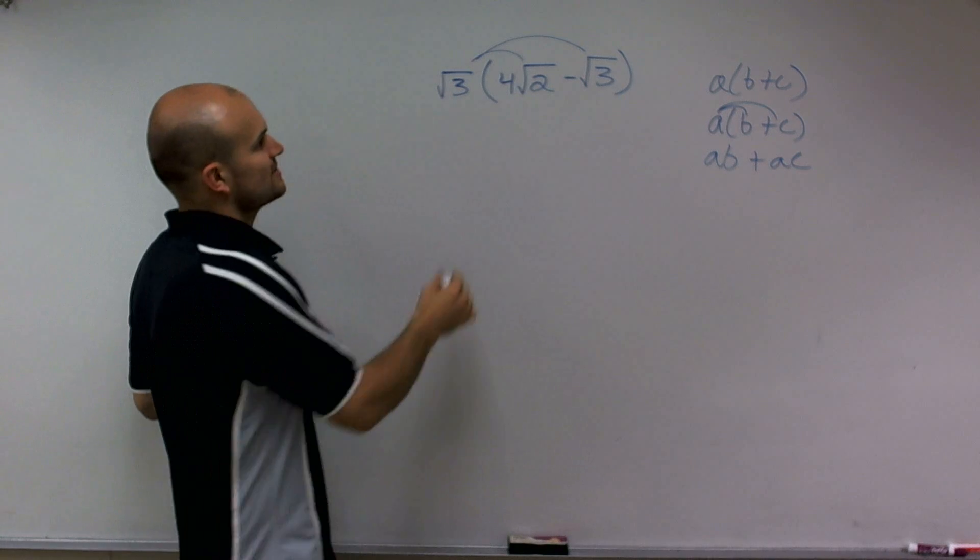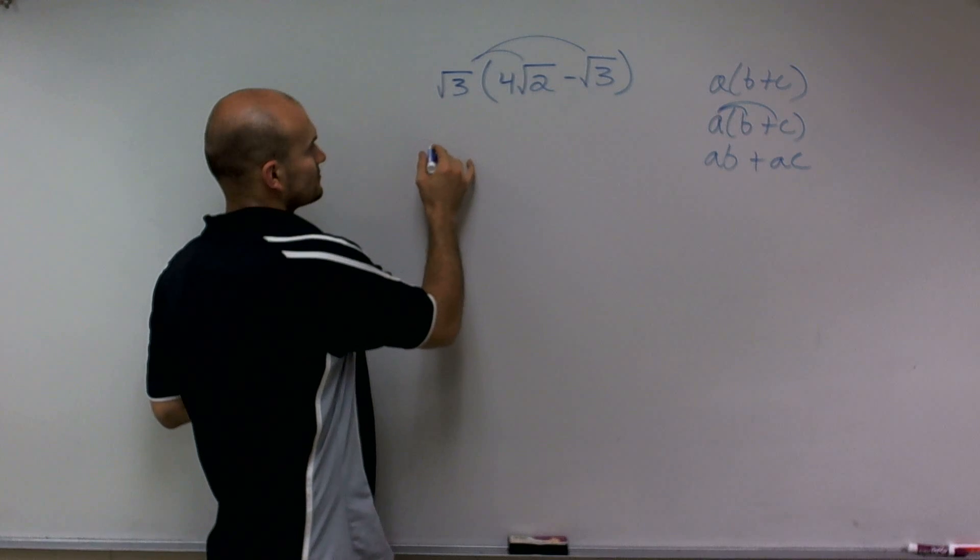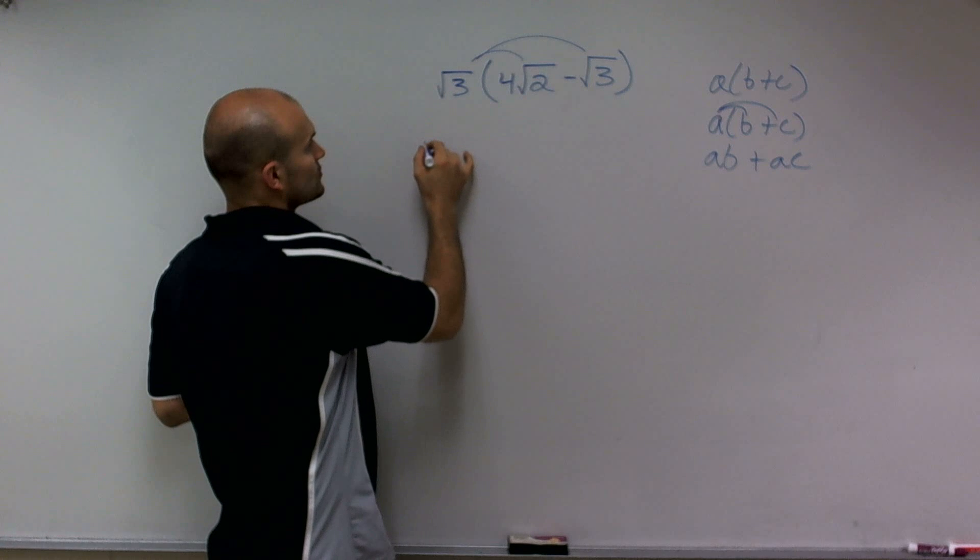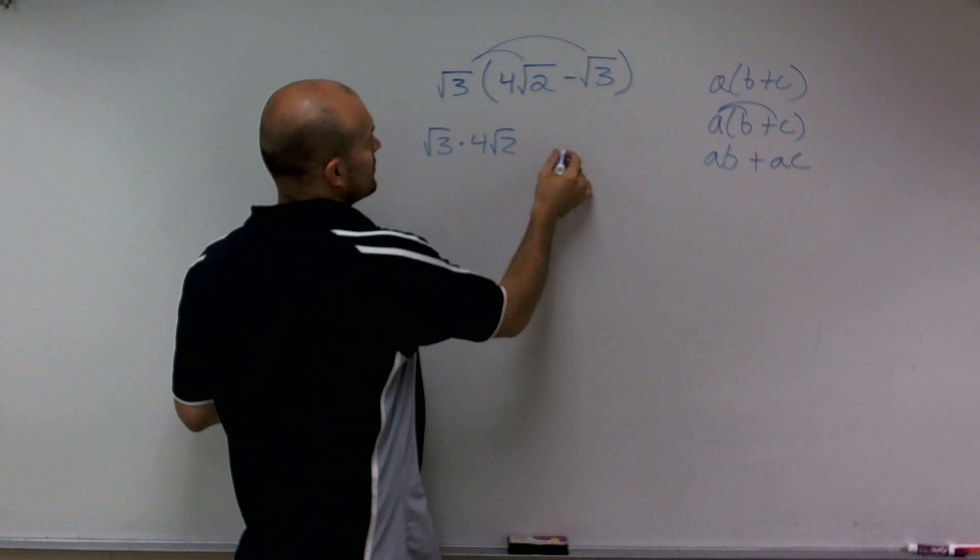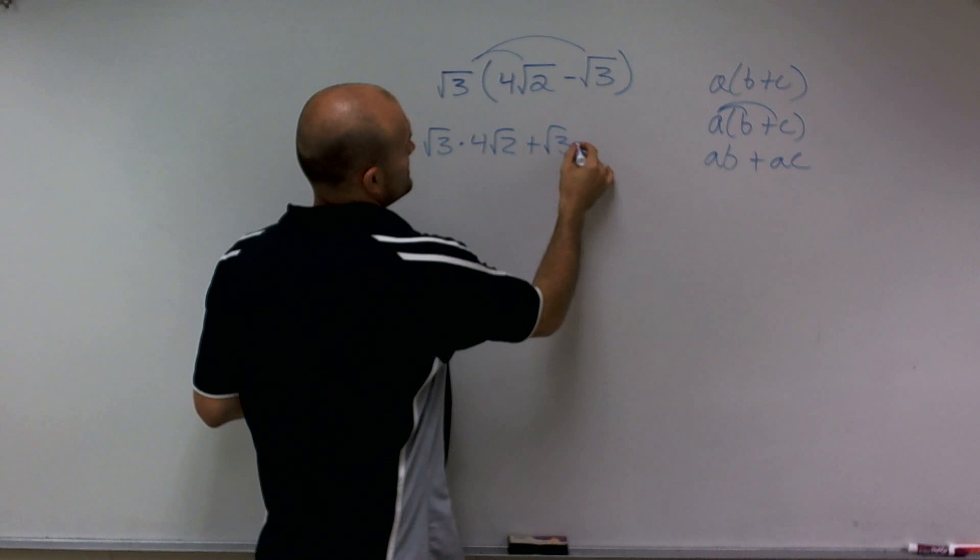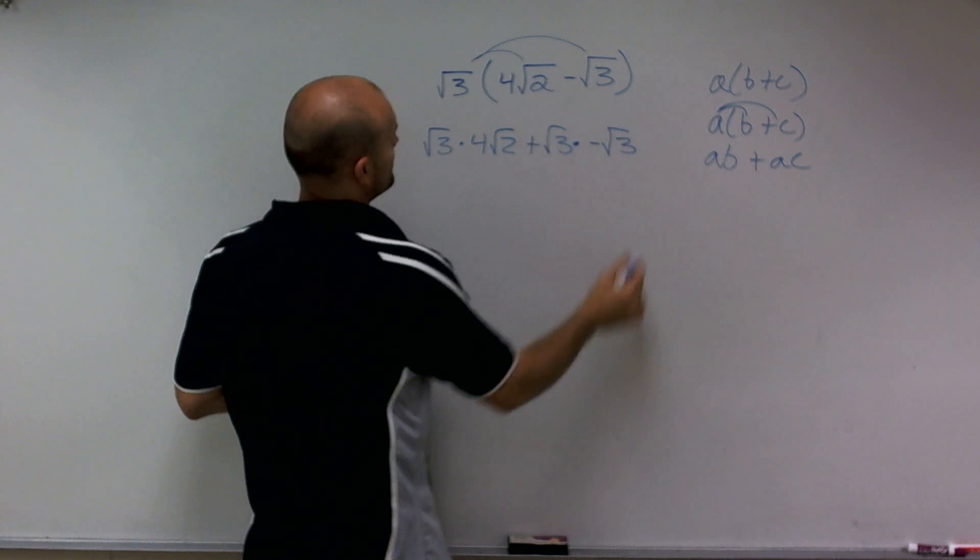So here I'm going to do the same thing. I'm going to have square root of 3 times 4 square root of 2 plus the square root of 3 times negative square root of 3.